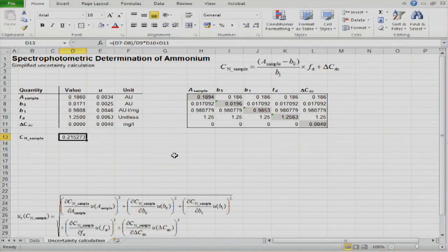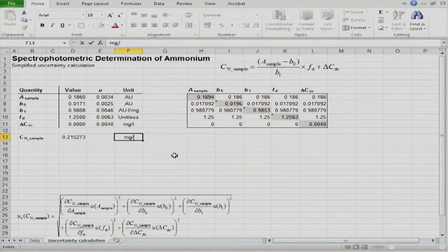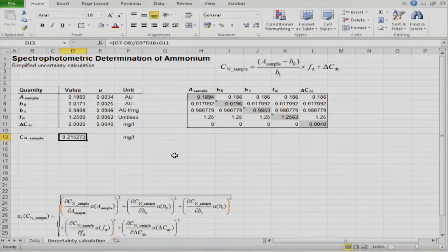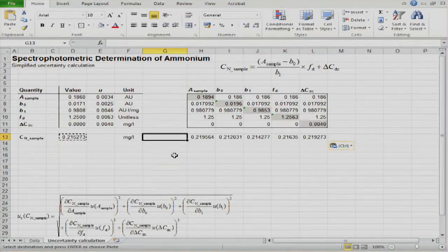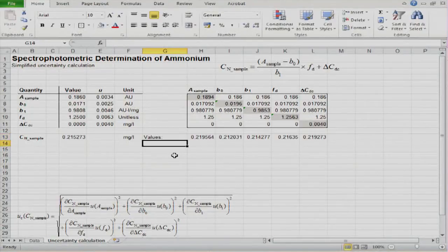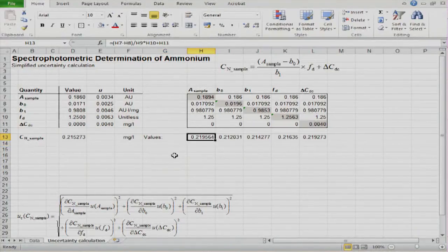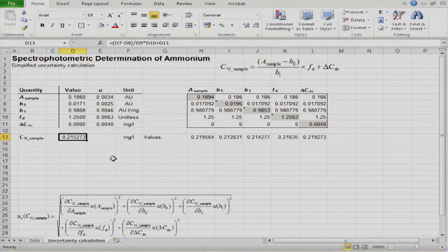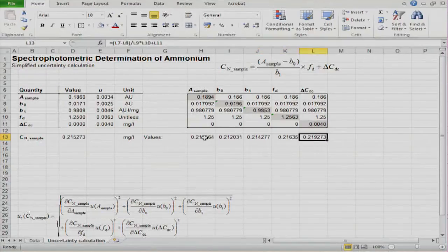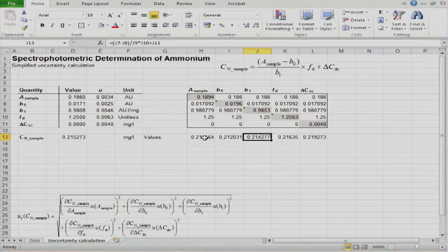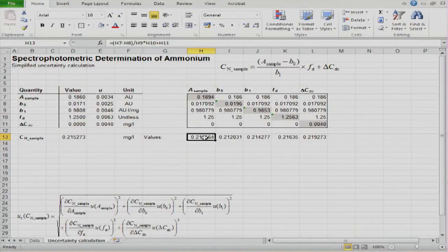This value, of course, carries the units milligrams per liter. With this same formula, which we can copy, we can calculate all these values also here. We will calculate the uncertainty components as simple subtraction between these values that we have here and this value here. Basically, all these values are the same as was shown on the whiteboard, the value of the function whereby one of the input quantities, the delta input quantity, which according to the Kragten approximation is approximated by standard uncertainty, is added.